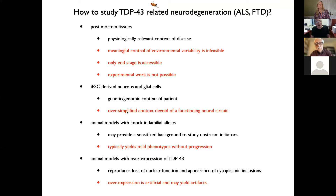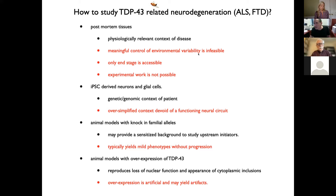I want to tell you a bit of an unpublished story, but I want to first talk for a moment about how we model TDP-43-related neurodegeneration. The simple fact is there is no perfect model; each approach has its own strengths and weaknesses. We can look at postmortem tissues — this has tremendous advantage of being physiologically relevant, the context of the disease — but we cannot control environmental variability in a meaningful way, we only observe the end stage, and experimental work is not possible. IPS cells have tremendous advantages but are an oversimplified context devoid of a functioning neural circuit.